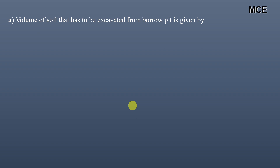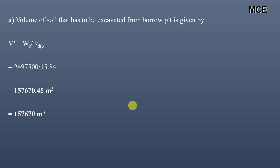The volume of soil that we need to extract from the borrow pit area is given by the weight of solids divided by the dry density of the borrow pit soil: 24,975,000 ÷ 15.84 = 157,670 m³. This is the volume of soil we need to extract from the borrow pit.